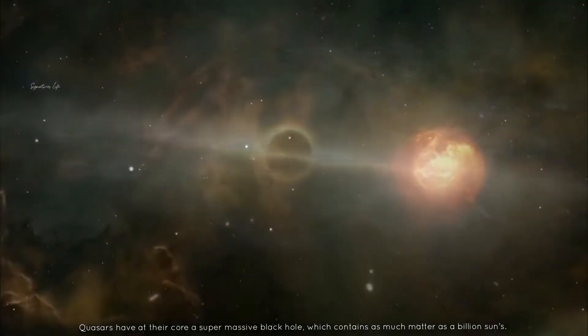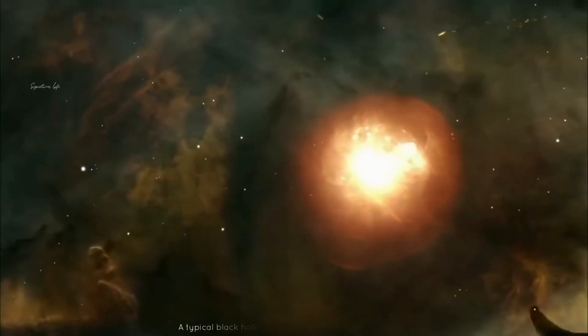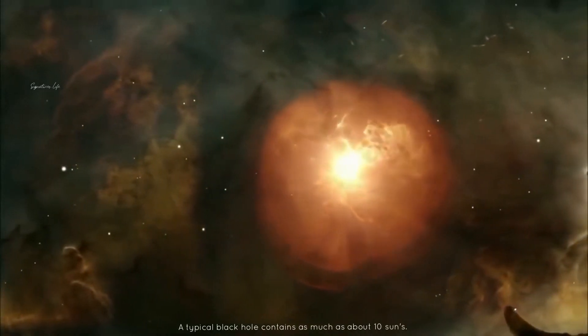Quasars have at their core a supermassive black hole which contains as much matter as a billion suns. A typical black hole contains as much as about ten suns.